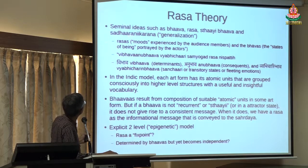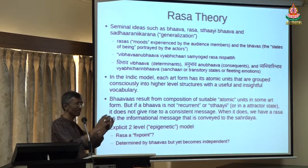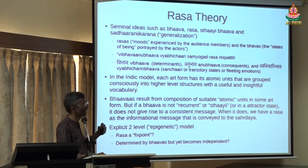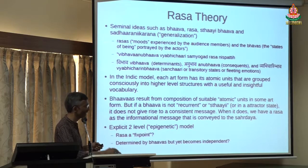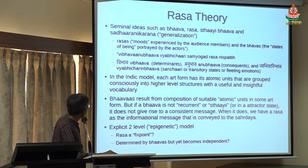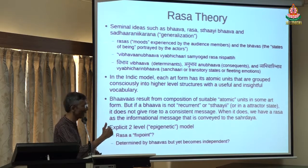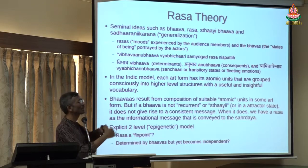There is the notion of Sadharanikarna — basically generalization. When you see a particular type of situation, you want to generalize it — for example, to being in love, or being angry. These powerful ideas have been constructed by Bharata, and by Lollata, Bhattanayaka, and others. What is interesting is that there is a two-level model: Rasa has one idea, and then there is Bhava — Bhavas are basically the lower-level atomic units out of which you construct the Rasa.